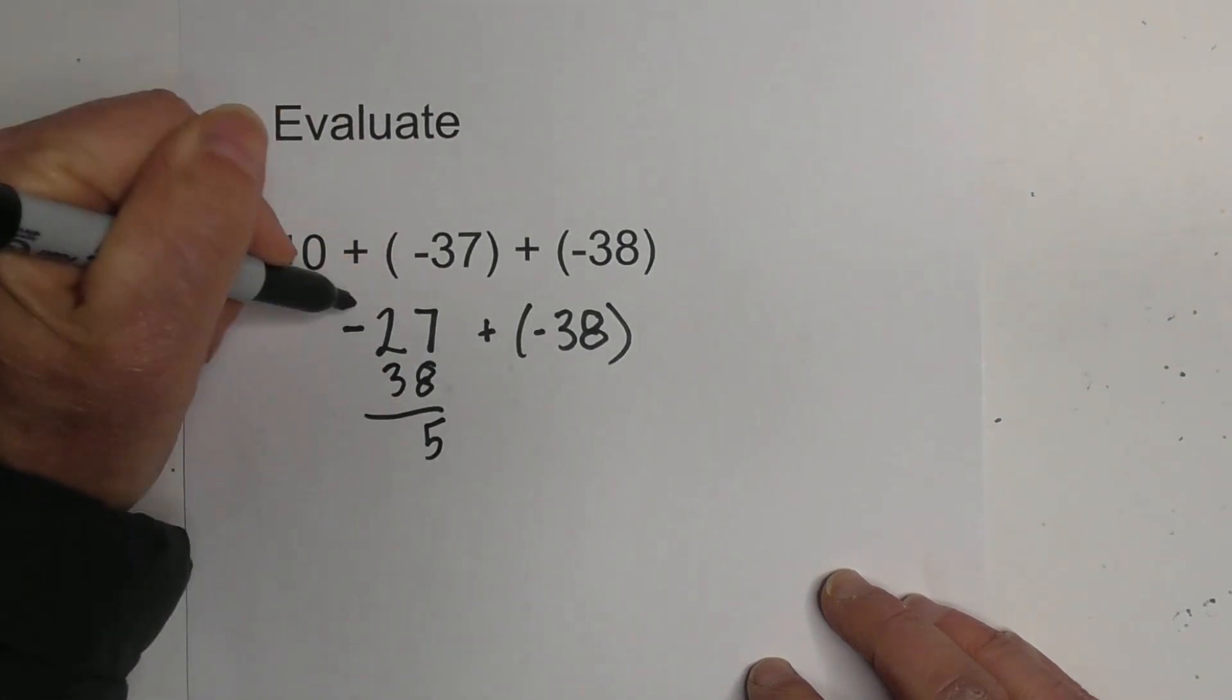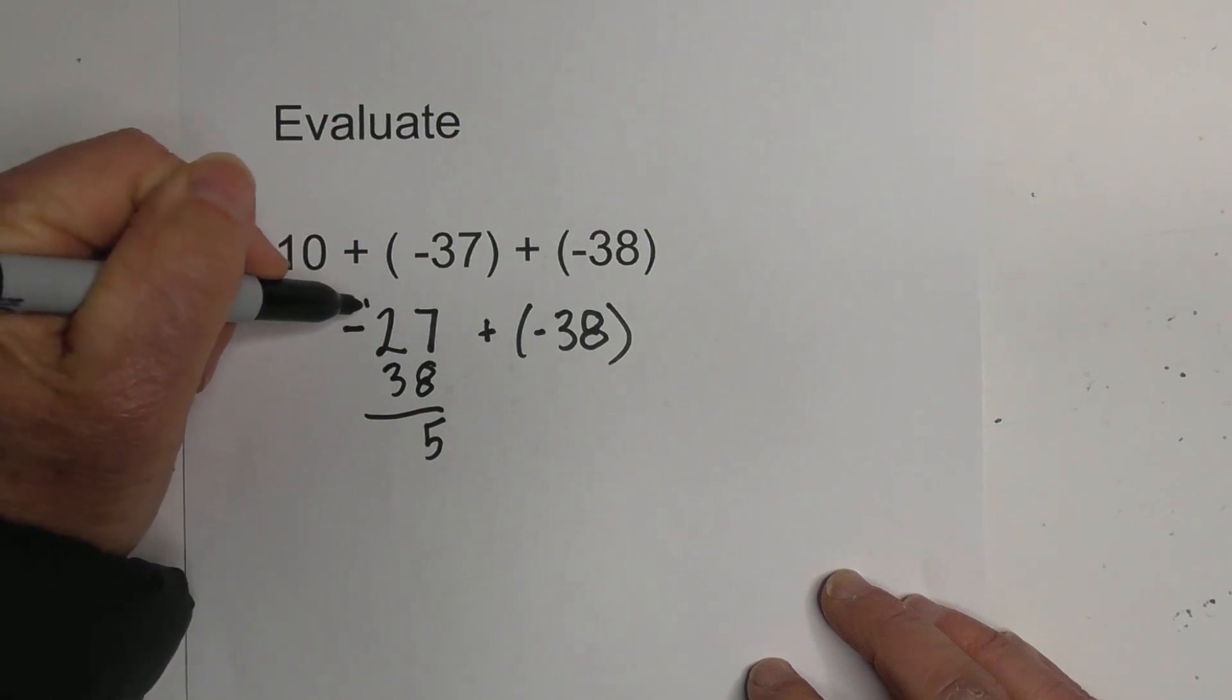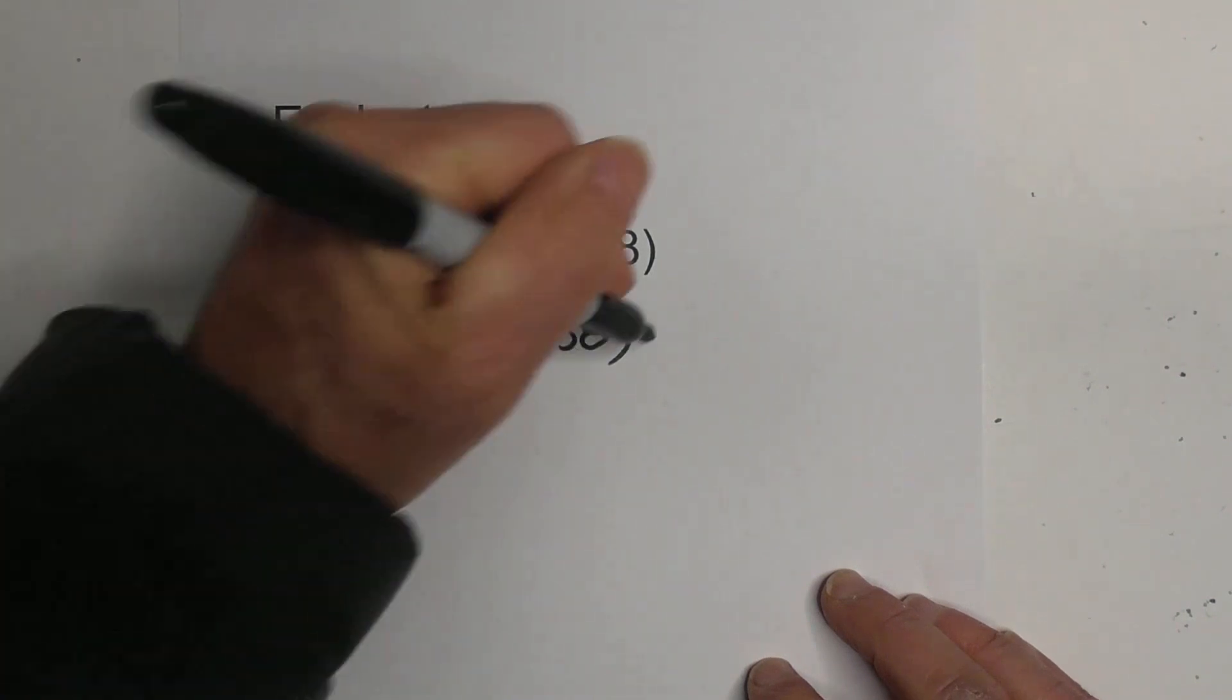That equals five. Bring the one over. So now we have three, four, five, six. We have 65.